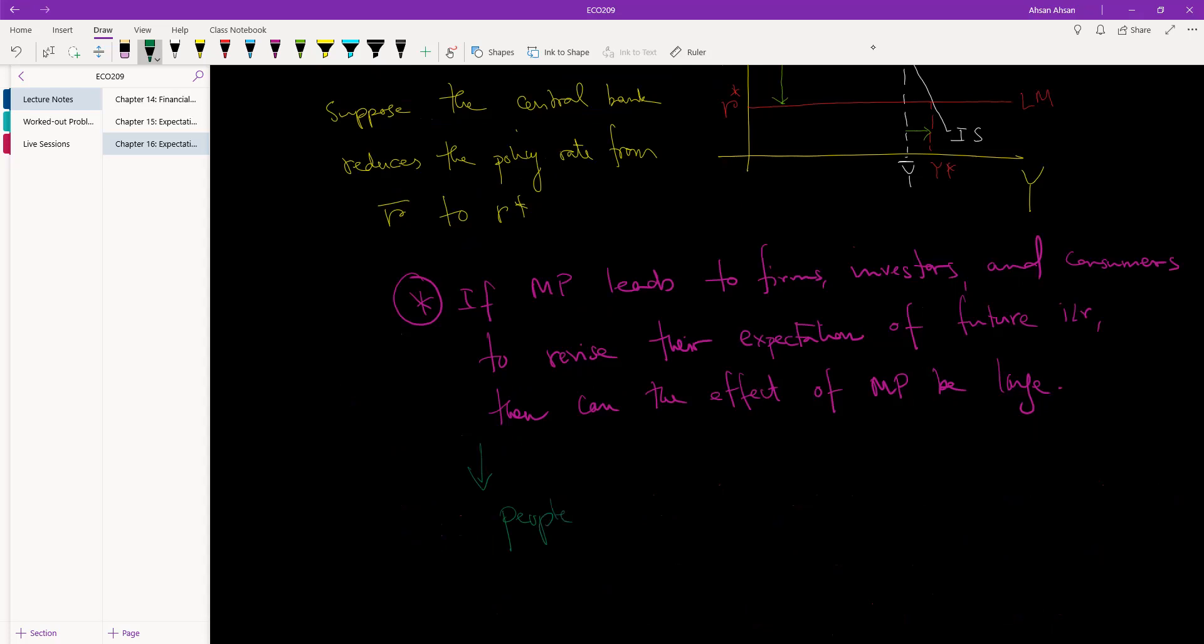So let's write this down. People expect the lower interest rate to remain at the low level for a number of periods. Let's say N number of periods.